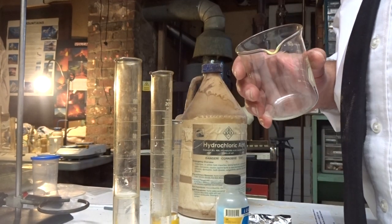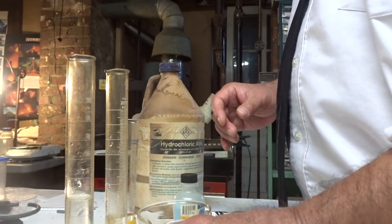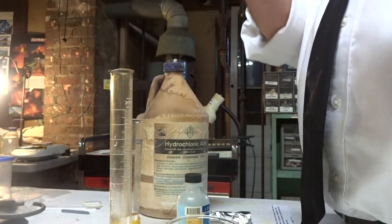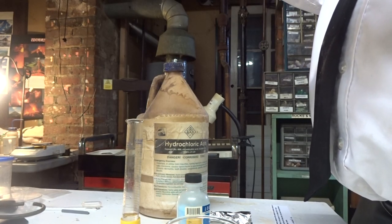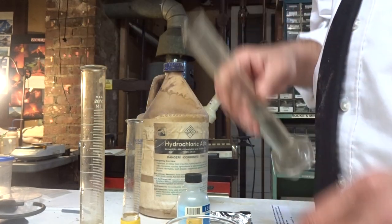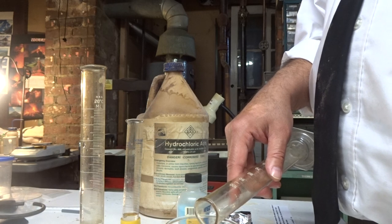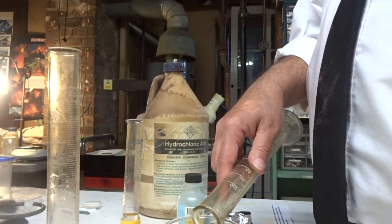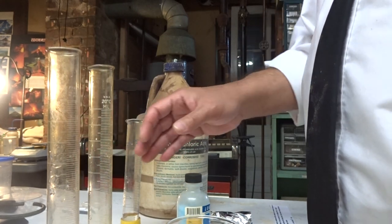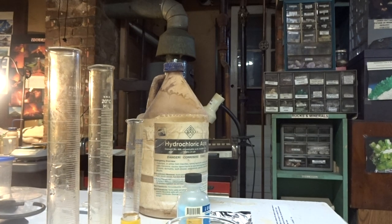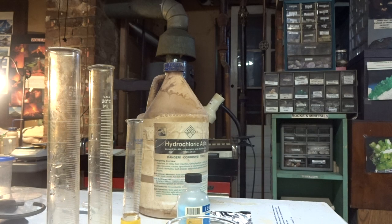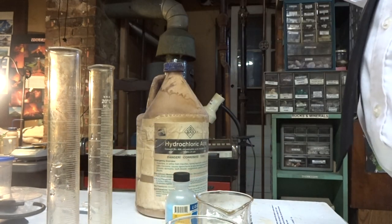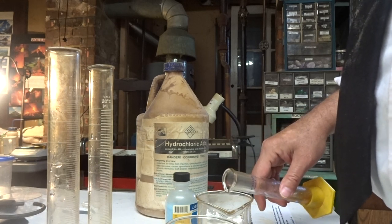Okay, I have a beaker. In the beaker, I'm going to place a stirring rod. And I'm going to add 75 milliliters of water. And in another beaker, I'm going to add 10 milliliters of hydrochloric acid, 16 molar.